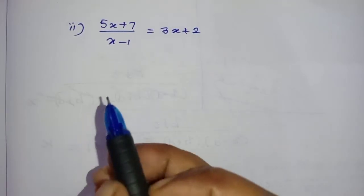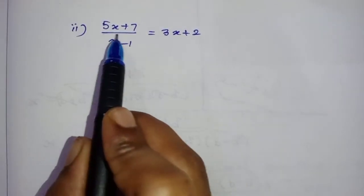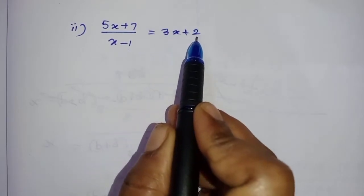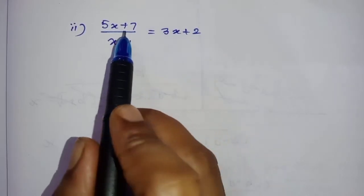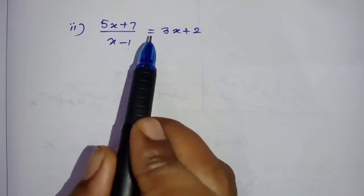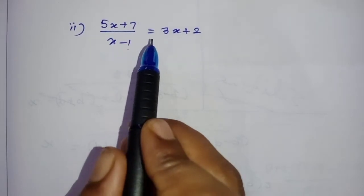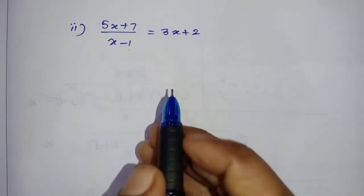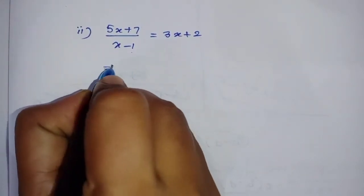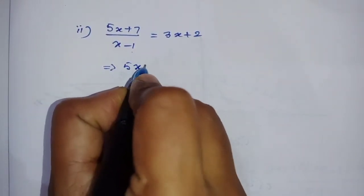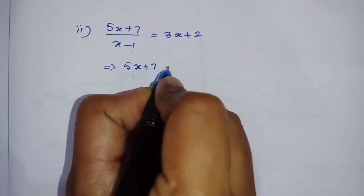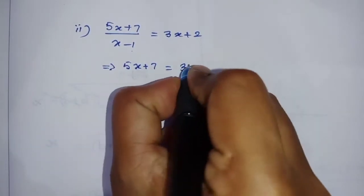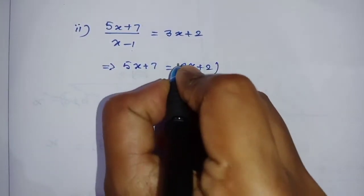Next is the second sum: (5x + 7) / (x minus 1) equal to 3x + 2. This is not yet in quadratic equation form, so we have to change it into the general quadratic form. To do that, we multiply both sides — so 5x + 7 equals (3x + 2) times (x minus 1).